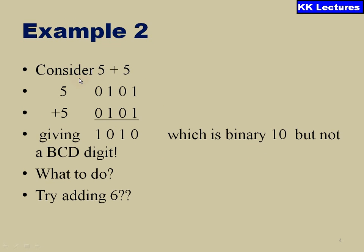Now consider an example 5 plus 5. So 5 plus 5 is 10. I am expressing 5 in BCD as 0101, again 0101. But when I add these two 5s, I am getting it as 1010, which is not a BCD code, which is binary 10 but not a BCD digit.